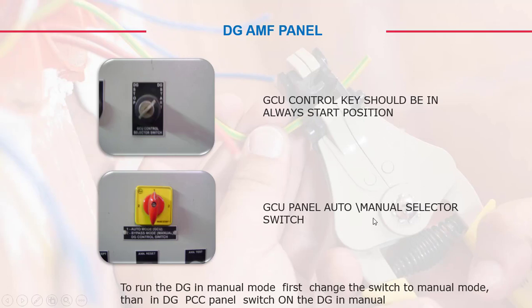On the GCU panel, the auto/manual selector switch controls operation. To run the DG in manual mode, first change the switch to manual mode, then switch on the DG from the PCC panel in manual. You should make your own instruction labels and stick them on these switches — this helps electricians and others operate the equipment effectively. Signage is one of the best practices to avoid any kind of accident.